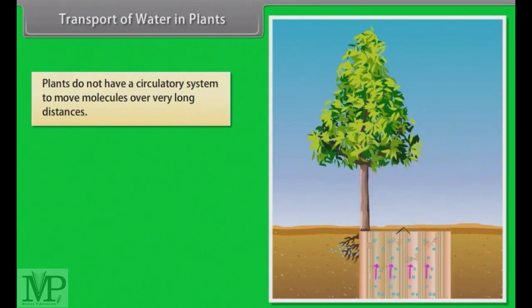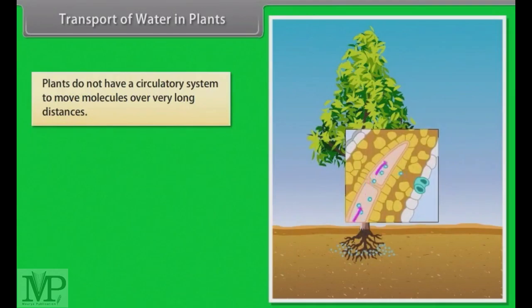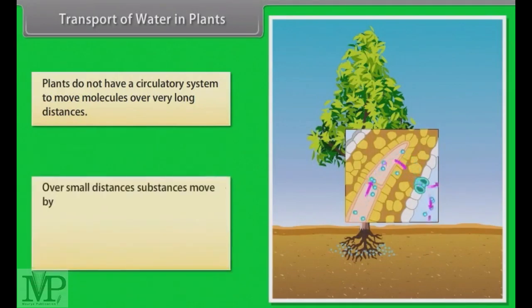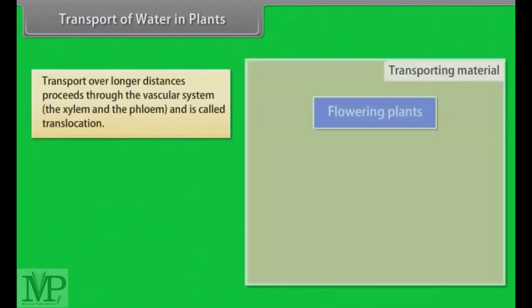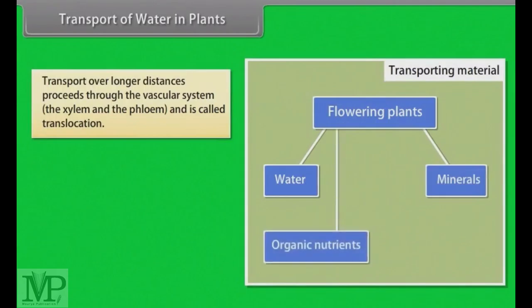In a flowering plant, the substances that would need to be transported are water, mineral nutrients, organic nutrients and plant growth regulators. Over small distances, substances move by diffusion and by cytoplasmic streaming supplemented by active transport. Transport over longer distances proceeds through the vascular system and is called translocation.